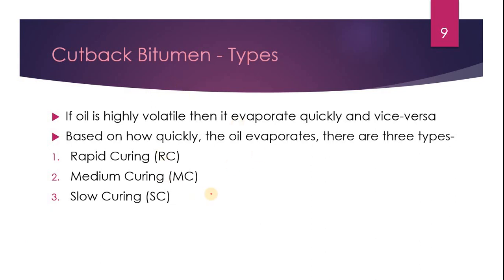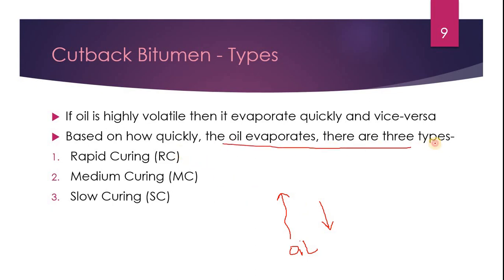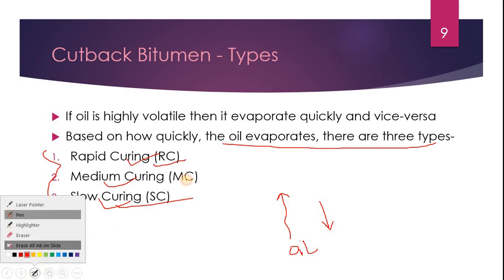Types of cutback bitumen are classified based on how rapidly the oil evaporates. If the oil evaporates quickly, it is rapid curing (RC). If evaporation is slowest, it is slow curing (SC). In between is medium curing (MC).